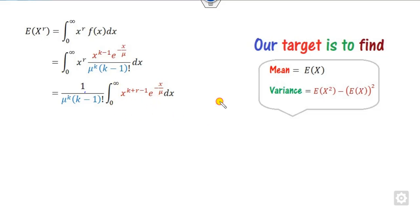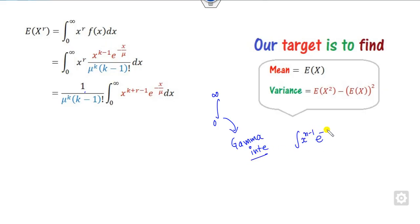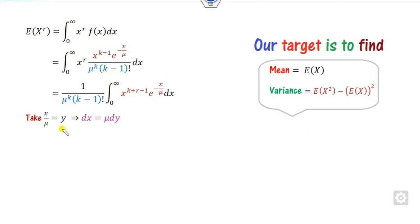Whenever there is an integration from 0 to infinity, this is always the gamma integration. The gamma form is: X^(n-1) * e^(-X), integrated from 0 to infinity. You can see here we only have minus X, so I can take X/mu as Y. The value of dX is then mu*dY. Substituting, when X is 0, Y is 0.